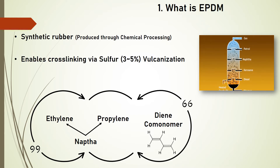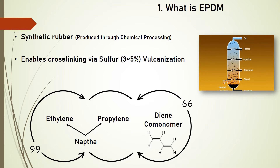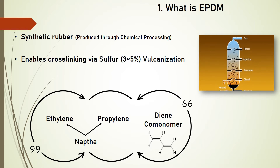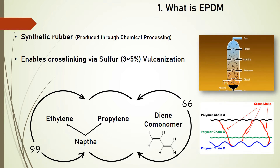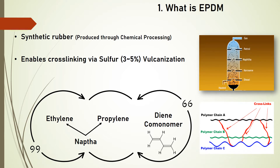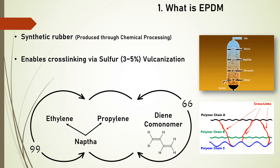It is further processed with sulfur — 3 to 5 percentage of sulfur is added through the vulcanization process. This enables cross-linking. The final EPDM rubber has the quality of being highly flexible and can be stretched to a greater extent.